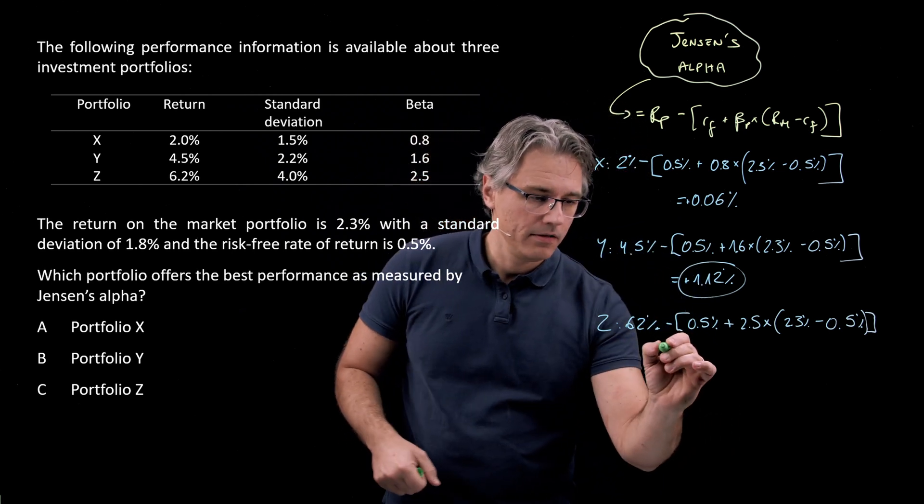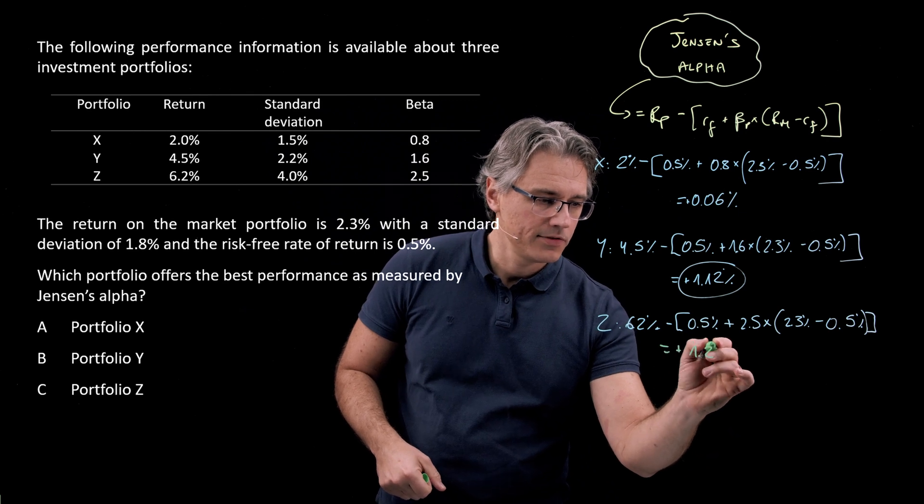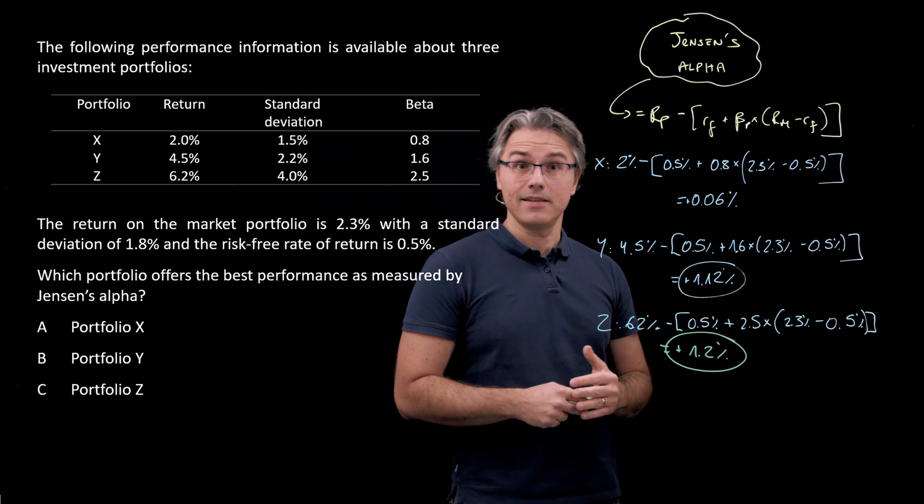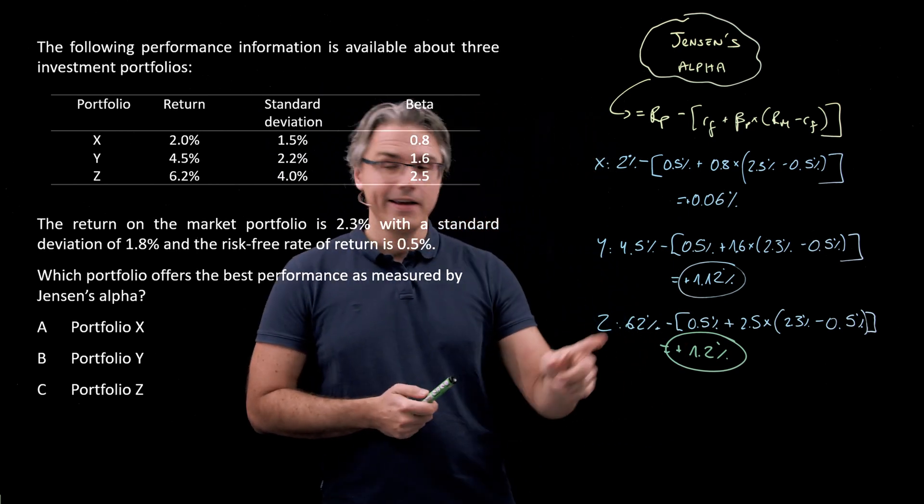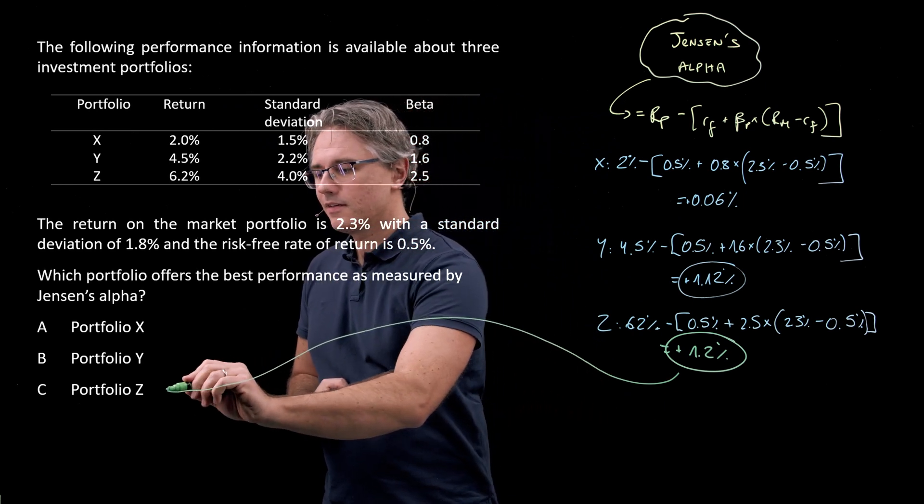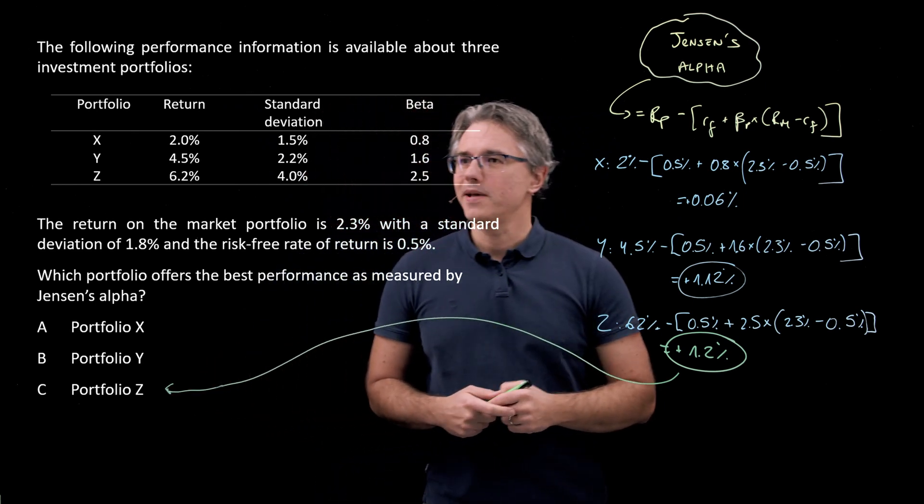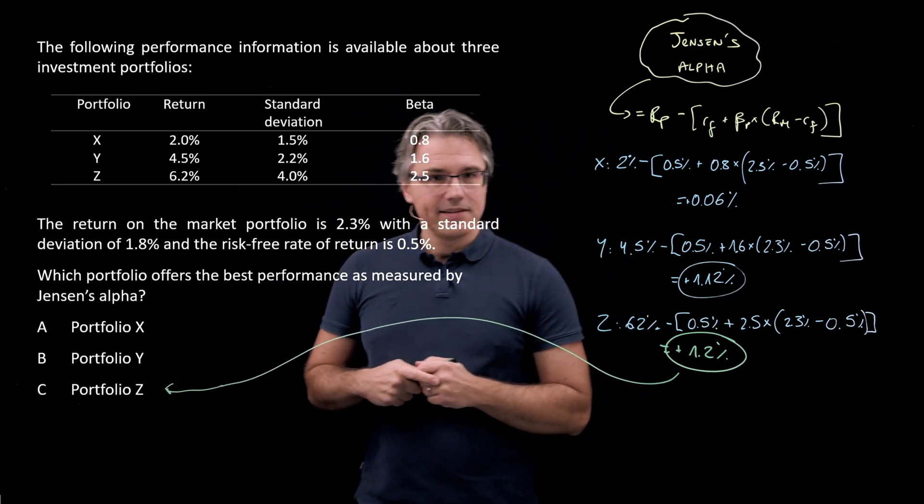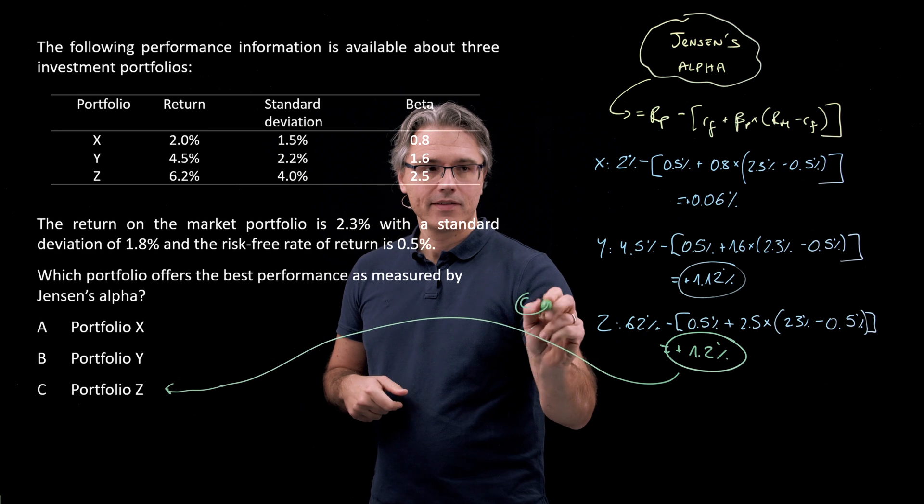And for this one, I see a result which is even higher. It's positive, and it's 1.2%. So that's a measure of the excess return above what's required, and that will lead me to conclude that portfolio Zed is the one which performs best. It's got the best performance as measured by Jensen's Alpha. So, answer C.